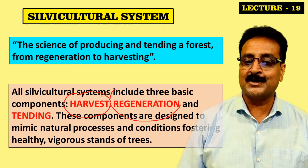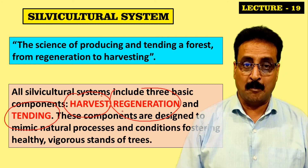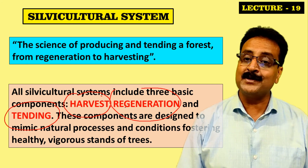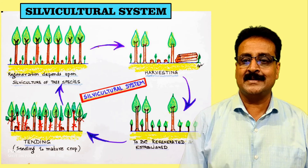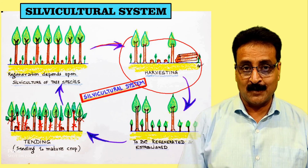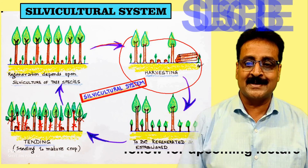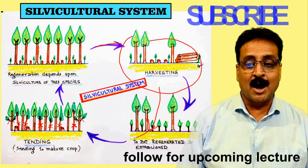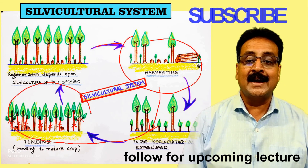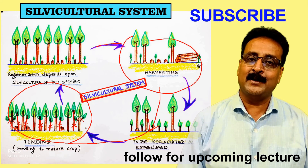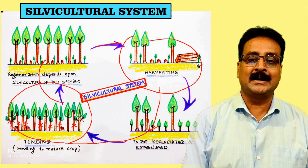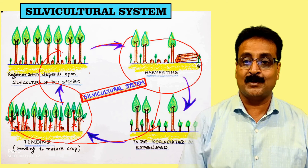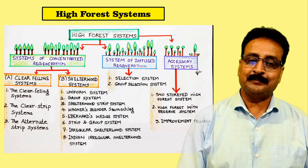Every silvicultural system follows three very important components: harvesting, regeneration, and tending. The pattern of how these are carried out differentiates different silviculture systems. We must carefully plan how many trees to harvest, how to get good regeneration, and then conduct tending operations including thinning, ultimately producing mature trees ready for harvest again.